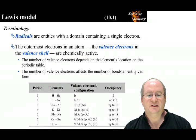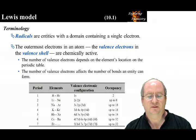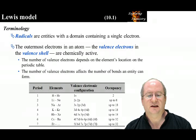Radicals are entities with a domain containing a single electron. We previously discussed the concept of core and valence electrons. Only the valence electrons are chemically active. The number of valence electrons depends on the position of the element on the periodic table.